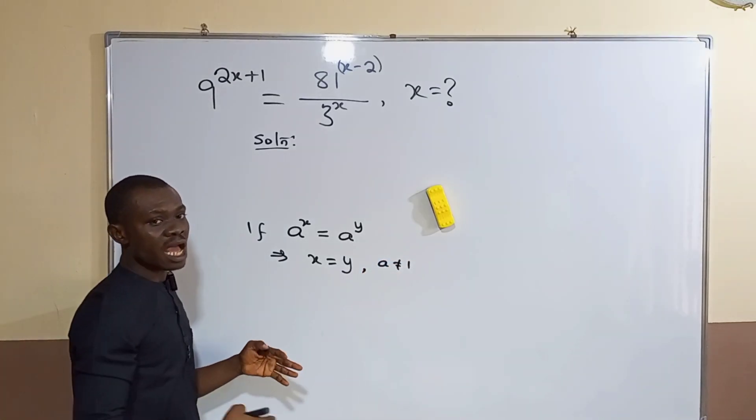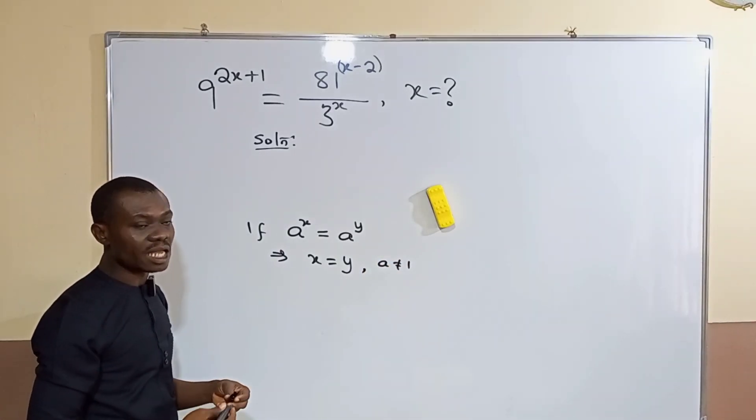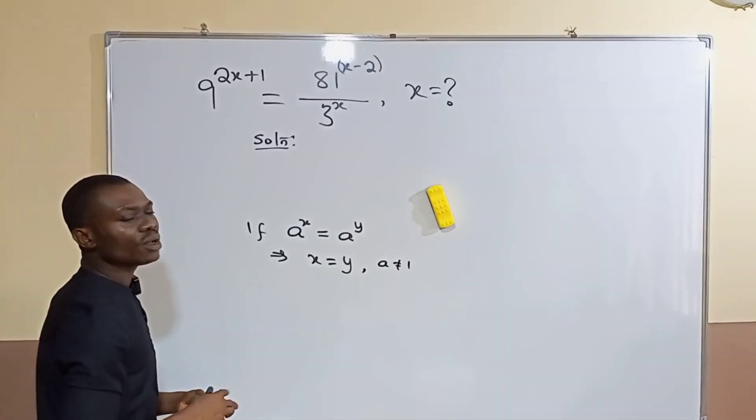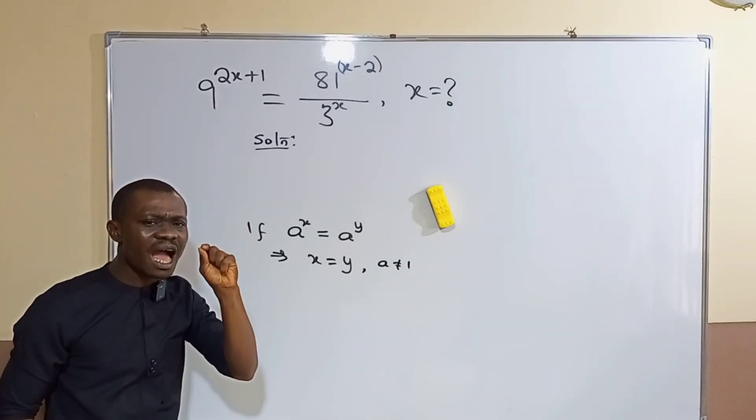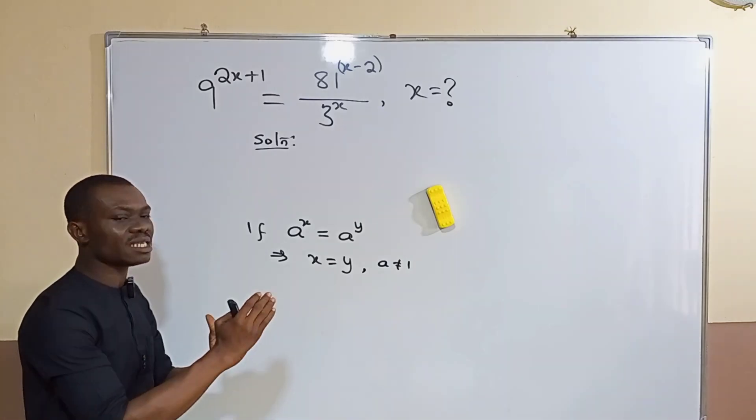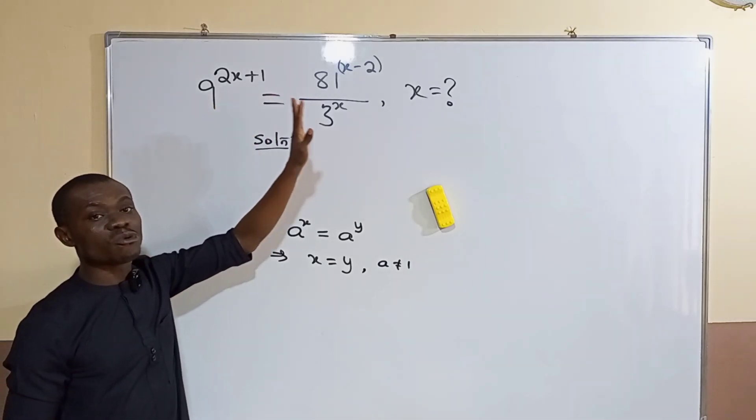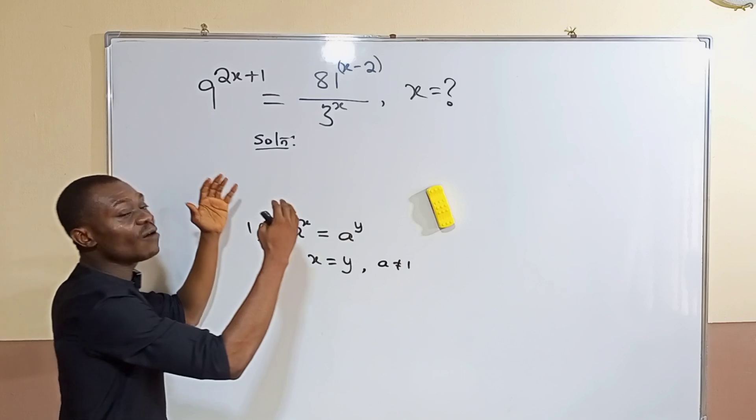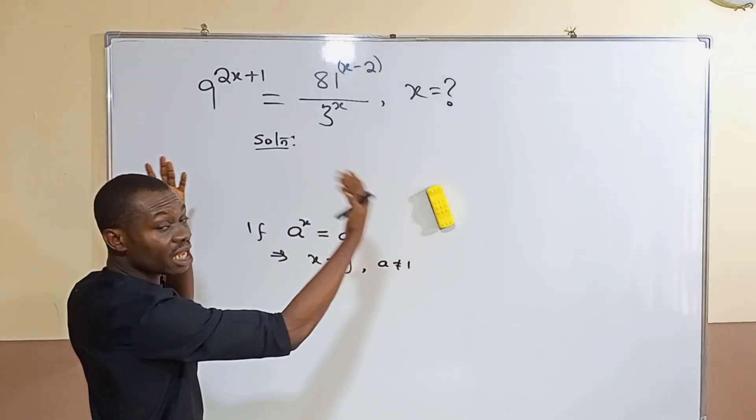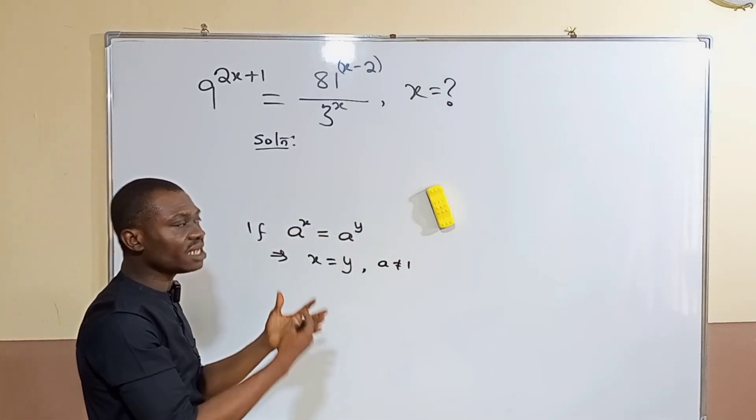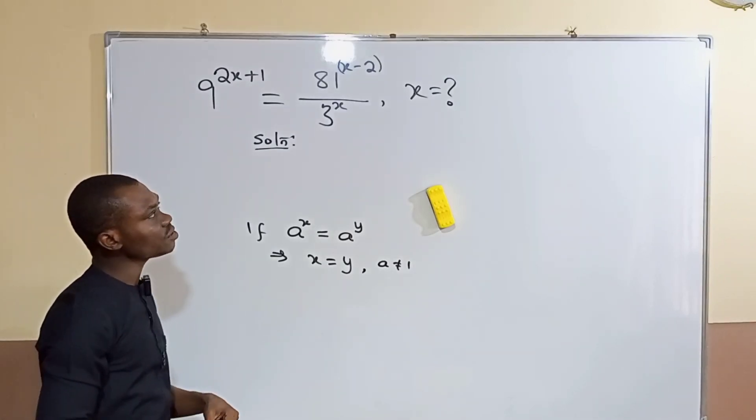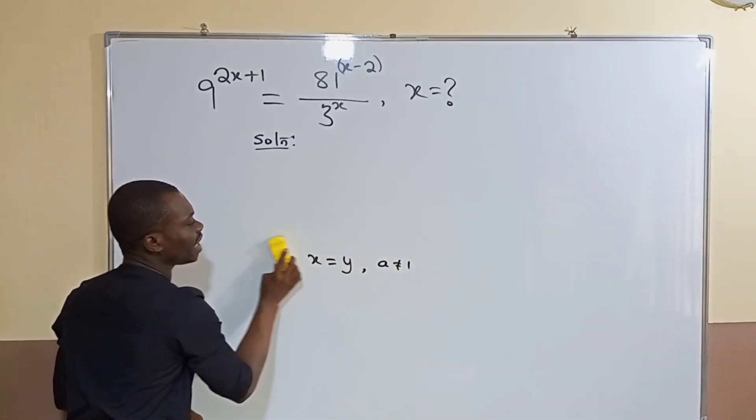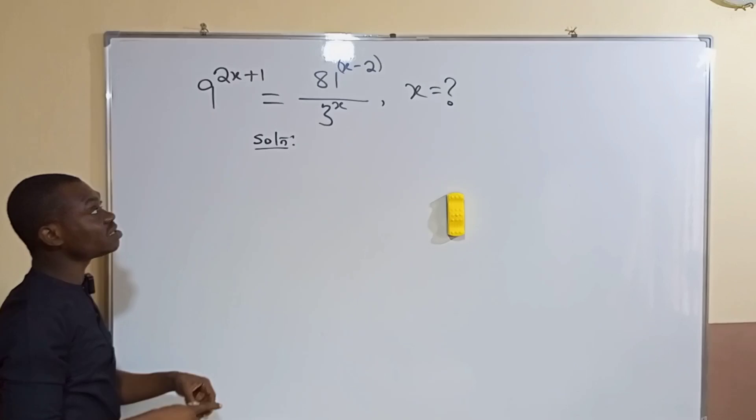Remember that there is an exception: your a must not be one, and some people will say and zero. Now in other words, whenever you're given a problem like this, your target is how can I put both sides to be in index form where you have only one index for a number on both sides and the base of each of them will be the same.